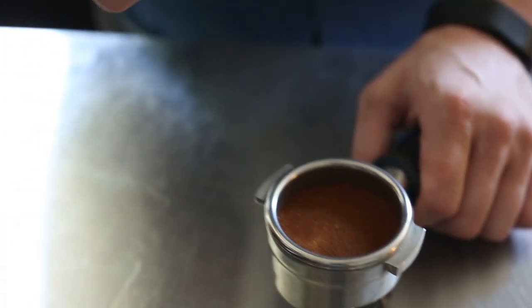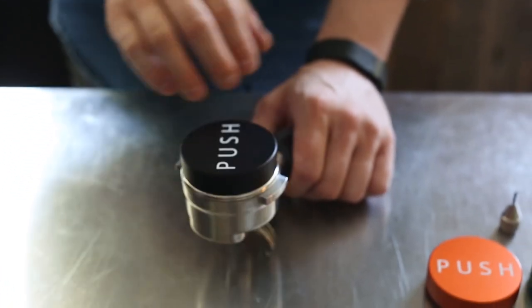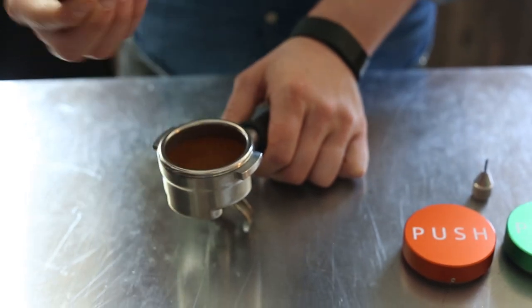You can eliminate a variable in tamping by having everyone tamp to the same depth, nice and level with the basket. That gives you more consistent extractions and better coffee for your customers.